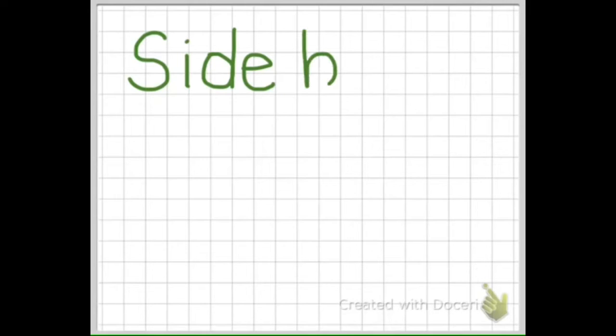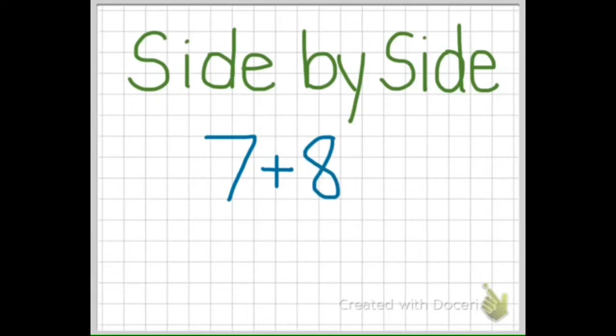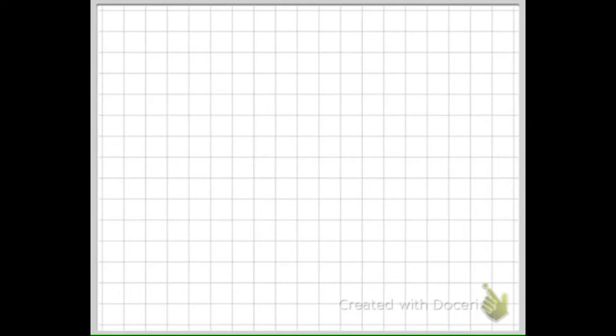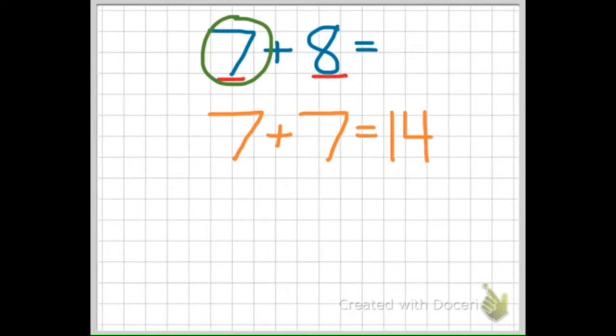The next strategy we'll explore is called side-by-side. Side-by-side simply means that both addends are located right next to each other on the number line. Notice in the number sentence 7 plus 8 that 7 and 8 are right next to each other in counting order on the number line.